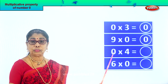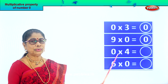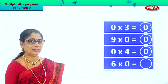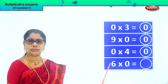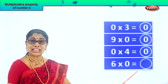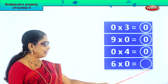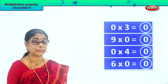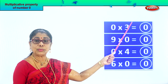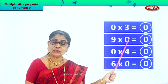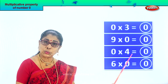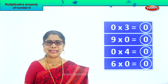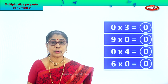Zero into four — zero multiplied by any number. Zero into four is equal to zero itself, very good. Six into zero — six multiplied by zero is equal to — good — zero. So we write the answer zero here. Any number multiplied by zero gives you zero. Let's go together: zero into three is equal to zero, nine into zero is equal to zero, zero into four is equal to zero, six into zero is equal to zero. Did you enjoy the exercise? Multiplicative Property of Zero.